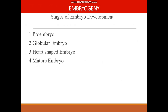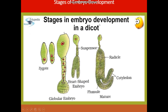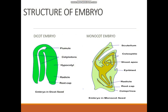Soon after endosperm development, embryo development starts. The development of the embryo is called embryogeny. The zygote will develop into the pro-embryo, then globular embryo, then comes heart-shaped embryo, and finally the mature embryo. So the different stages of the embryo are: pro-embryo, globular embryo, heart-shaped embryo, and mature embryo.